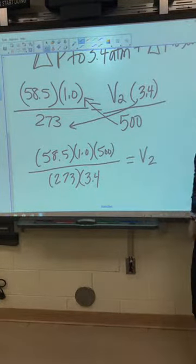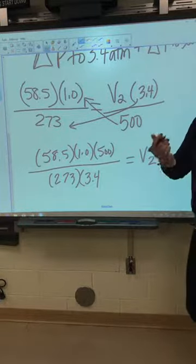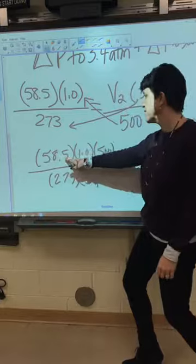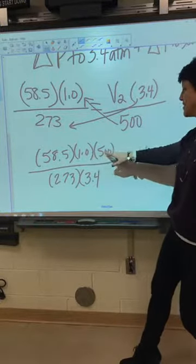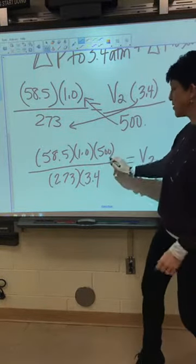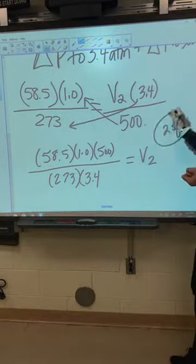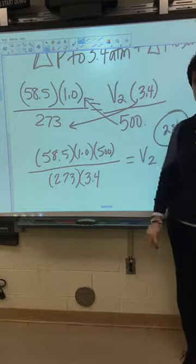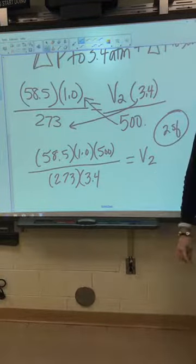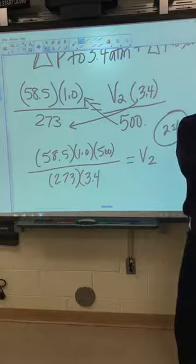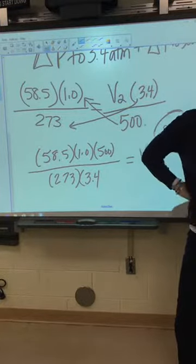What do I do next? I need to cross-multiply. So, I'm going to multiply 58.5 times 1 times 500, and I'm going to divide that by 273 times 3.4. That will equal my second volume. I'm actually not going to take the time to do the math on the calculator because you can all do that. Let's talk sig figs, though. That has 3 sig figs. That has 2 sig figs. So, I want 2 sig figs in my answer. So, when you get your answer, make sure you round it so that you have 2 sig figs. I'm still waiting for questions to come in.